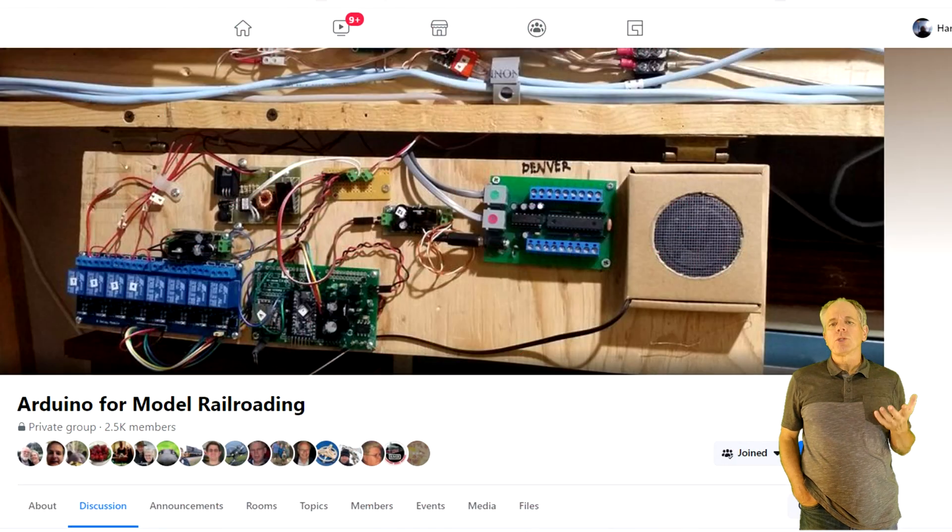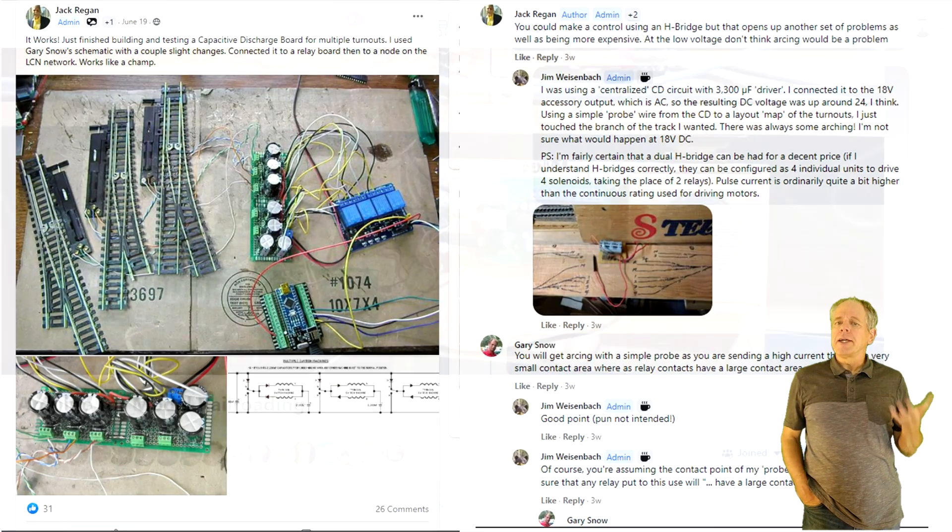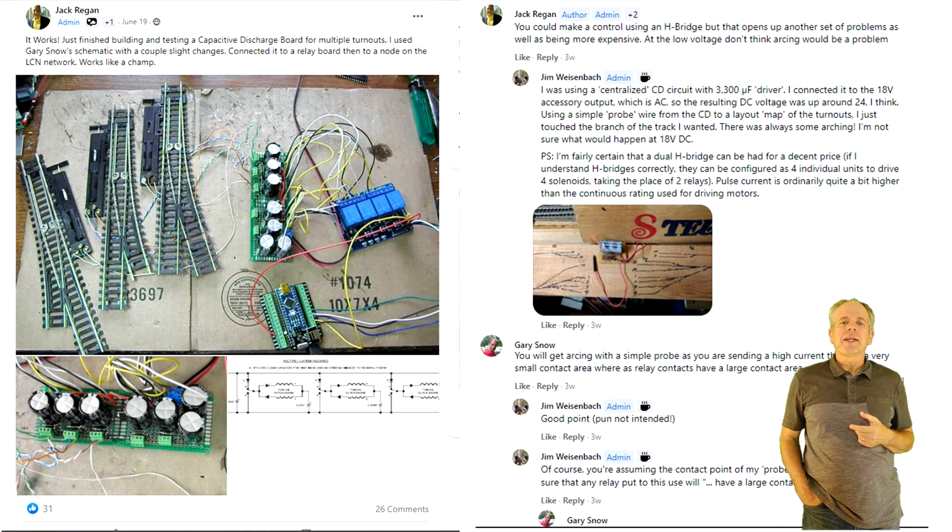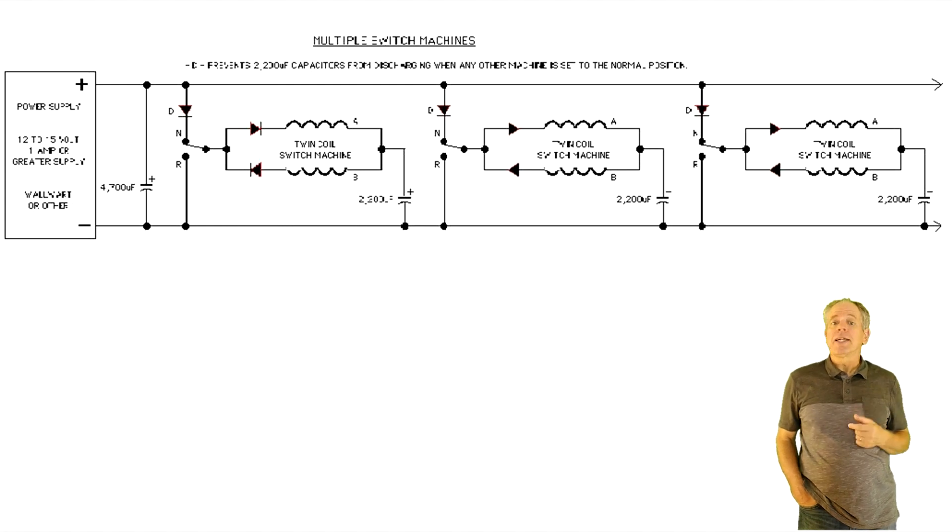The idea for this board stems from a post in the Arduino for model railroading group on Facebook a few months ago. A group member showed an arrangement of a few capacitors, diodes and a relay contact that would generate a voltage pulse to the coils of a snap switch every time the relay changes position. It is easy to see how it works, but just in case.